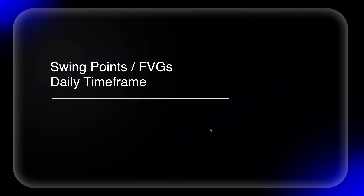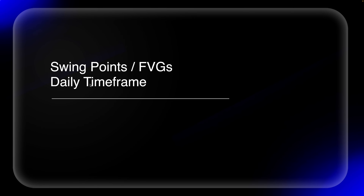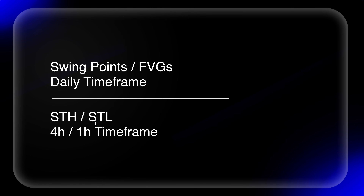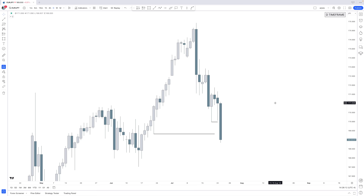I need your full attention with these slides — this is an extremely important topic and can be extremely confusing if you do not pay attention. Swing points and fair value gaps are marked out on the daily time frame as our targets. We can then use short-term highs and short-term lows on the four-hour and one-hour time frames, similar to what we did with intermediate term highs and lows.